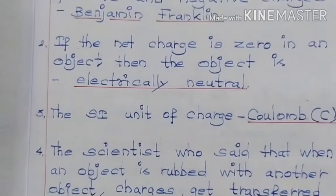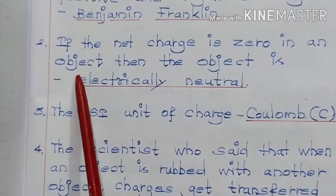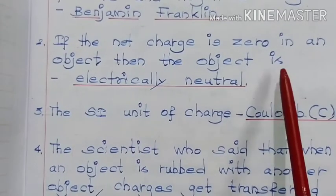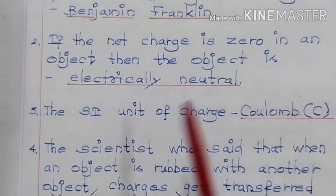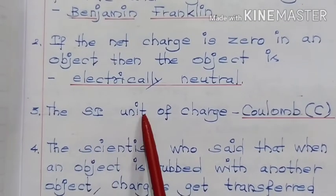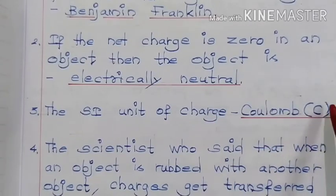If the net charge is zero in an object, then the object is electrically neutral. Next one is the SI unit of charge, Coulomb. Symbol is capital C.